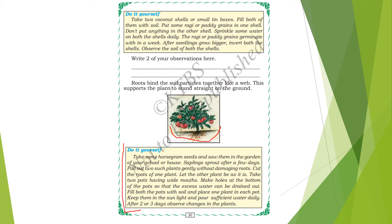Take some horse gram seeds and sow them in the garden of your school or house. Saplings sprout after a few days. Pull out two such plants gently without damaging the roots. Cut the roots of one plant and let the other plant remain as it is. Take two pots with wide mouths. Make holes at the bottom of the pots so that excess water can be drained out. Fill both pots with soil and place one plant in each pot.